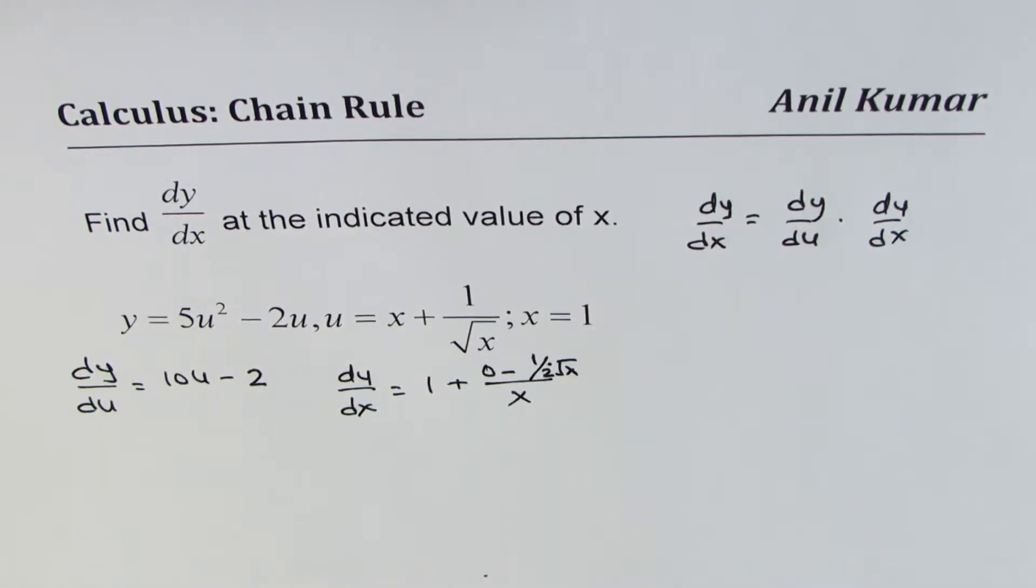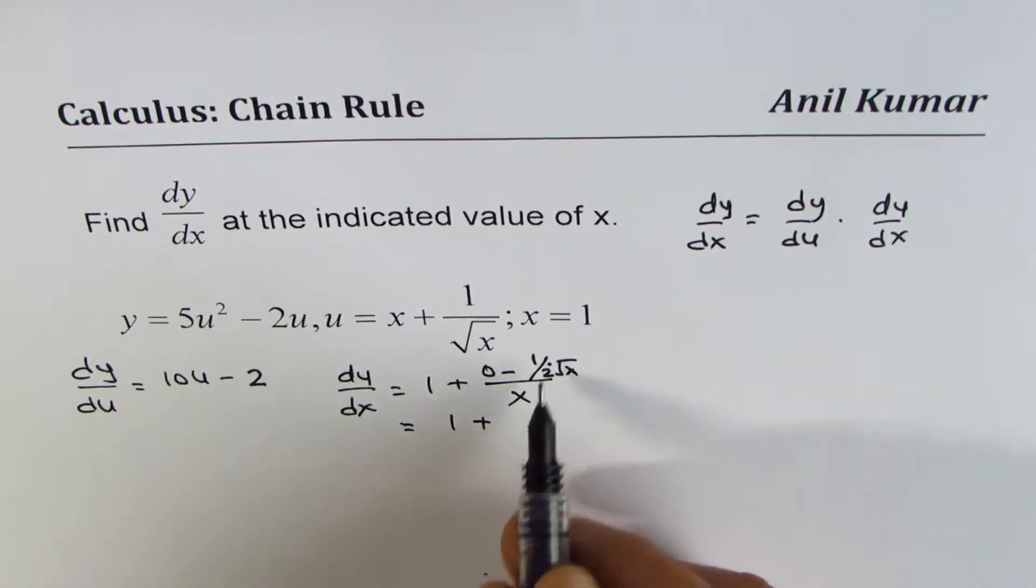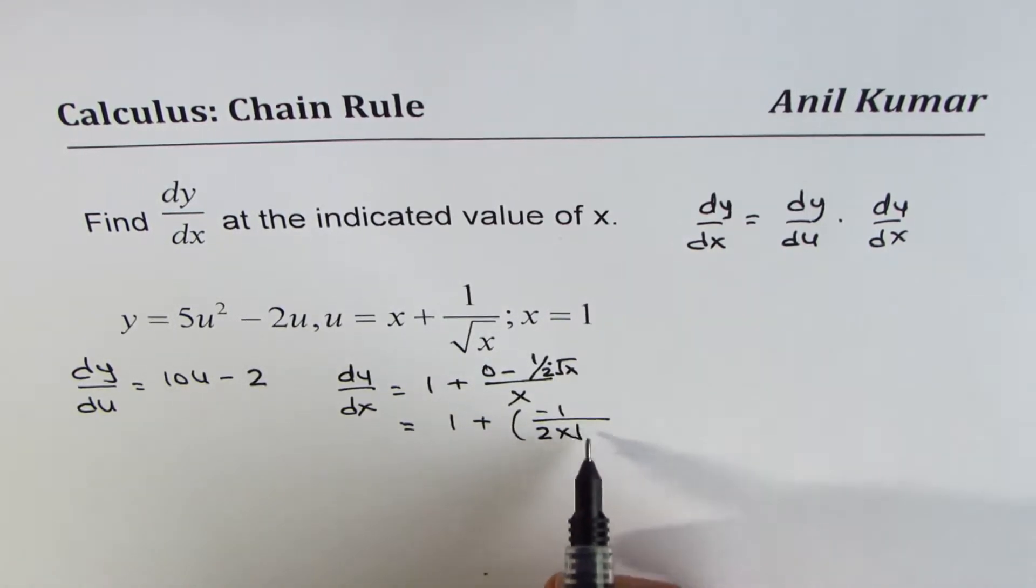So that is what the derivative is. So you could write this as 1 plus minus 1 over 2x square root x.